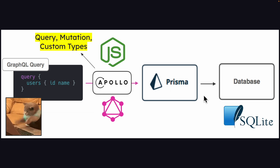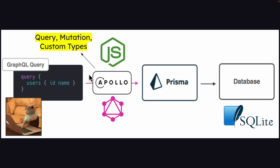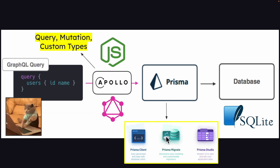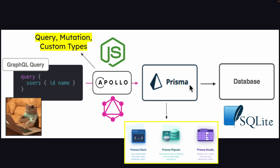We're going to start with the basic setup of our GraphQL server project, learn about how to add queries, mutations, and custom types to our GraphQL schema. And then we're going to learn about how to use Prisma Client, Prisma Migrate, and Prisma Studio to interact with our database, and so much more.